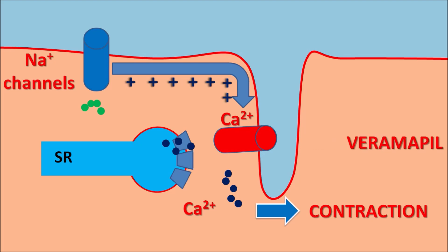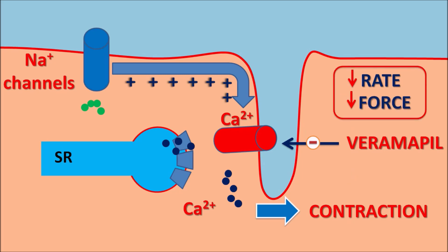Verapamil blocks these L-type calcium channels, thereby decreasing the rate of contraction — producing a negative chronotropic effect — and also decreasing the force of contraction, producing a negative inotropic effect. In this way, verapamil inhibits cardiac muscle function, decreasing both rate and force of contraction, which results in decreased cardiac output and decreased cardiac work.